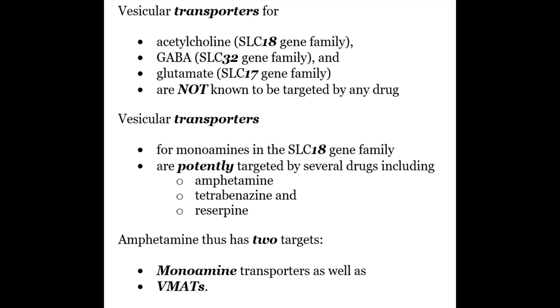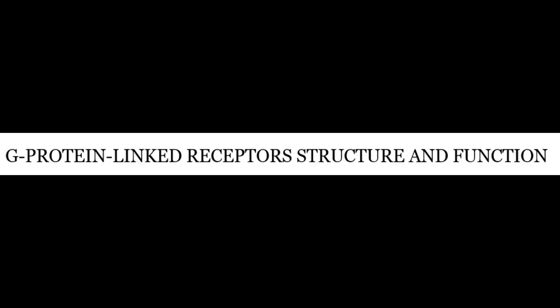On the other hand, vesicular transporters for monoamines in the SLC18 gene family are potently targeted by several drugs including amphetamines, tetrabenazine, and reserpine. Amphetamines thus have two targets: monoamine transporters as well as VMATs. Now let's discuss G-protein linked receptors in some detail.